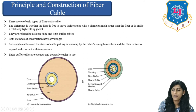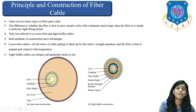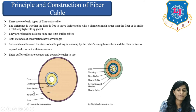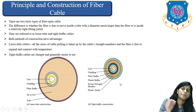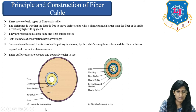Looking at two diagrams, the loose construction shows the inner core free to move inside, while in the tight construction the inner core is not allowed to move due to tight packing. All elements — core, cladding, fiber buffer, air or gel, and tube — are the same, but the construction differs. In the tight buffer case, a Kevlar strength member and plastic buffer are used instead of air or gel.